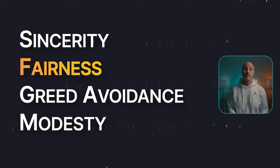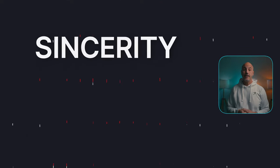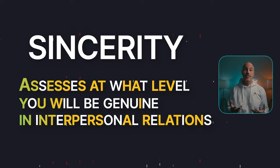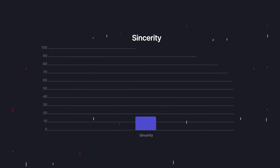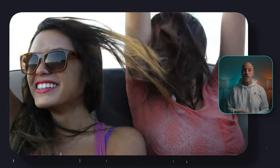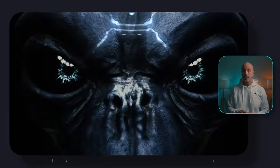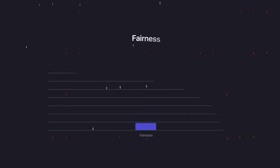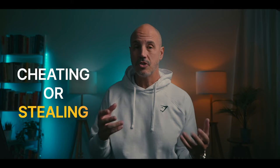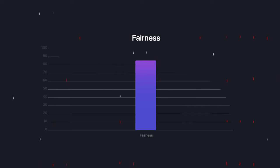Honesty and humility is made up of the categories: sincerity, fairness, greed avoidance, and modesty. Sincerity assesses at what level you will be genuine in interpersonal relations — if you are low in sincerity you will flatter others or pretend to like them to get favors, but if you're high in sincerity you will not want to manipulate others. Fairness assesses the tendency to avoid fraud and corruption — if you are low in fairness you will be willing to gain by cheating or stealing, but if you're high you will not take advantage of other individuals or of society at large.